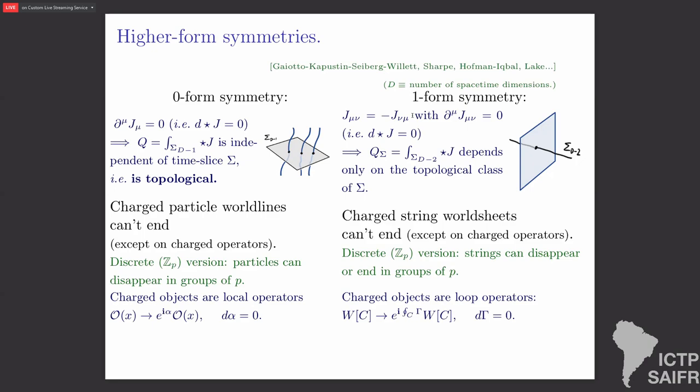A one-form symmetry is just the same, except the current is a two-form. A two-form is something that you can integrate over a co-dimension-two slice of spacetime to get a number. If it's conserved, then that number doesn't depend on deformations of that surface. A good way to think about that: this co-dimension-two object counts the number of string world sheets that it pierces. The statement of conservation says that these string world sheets can't end, except on charged operators. A charged operator is the thing that creates a string and transforms under the global one-form symmetry, where gamma is a closed one-form.